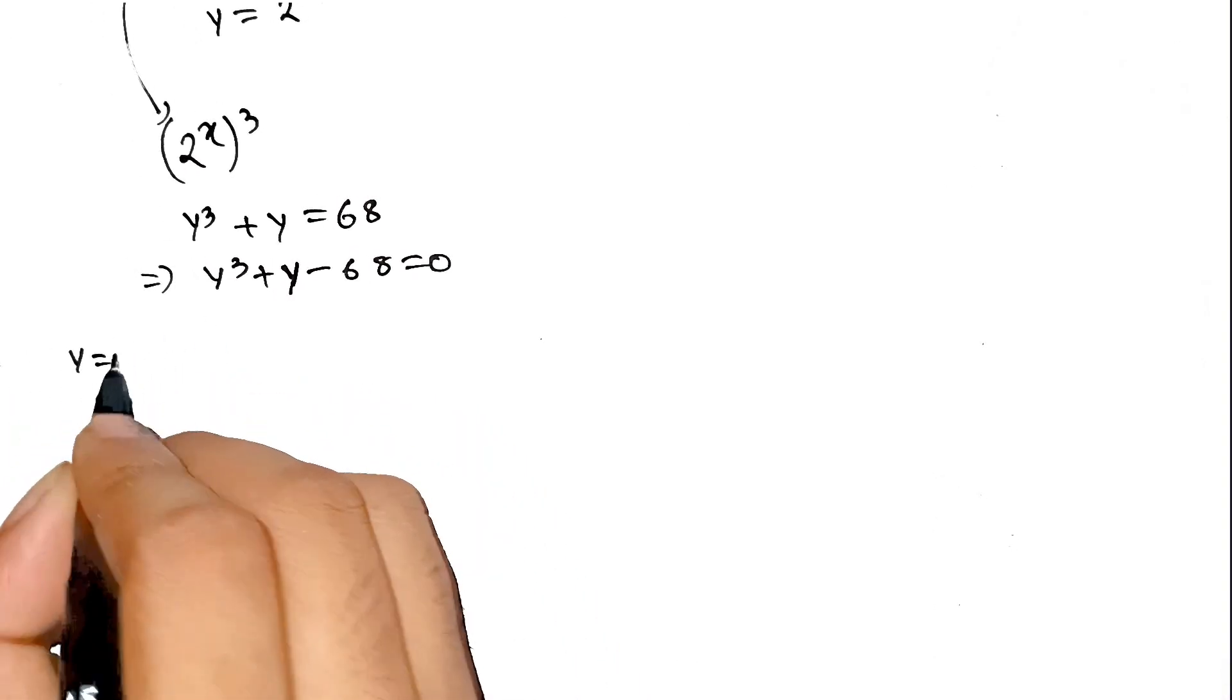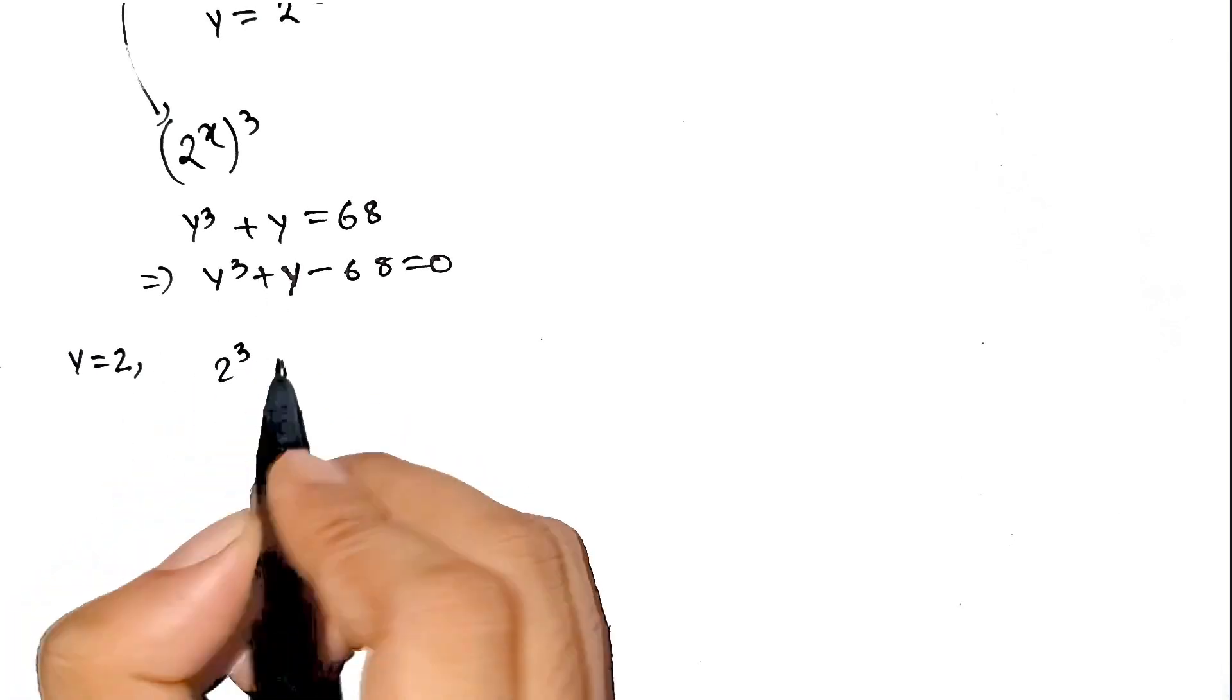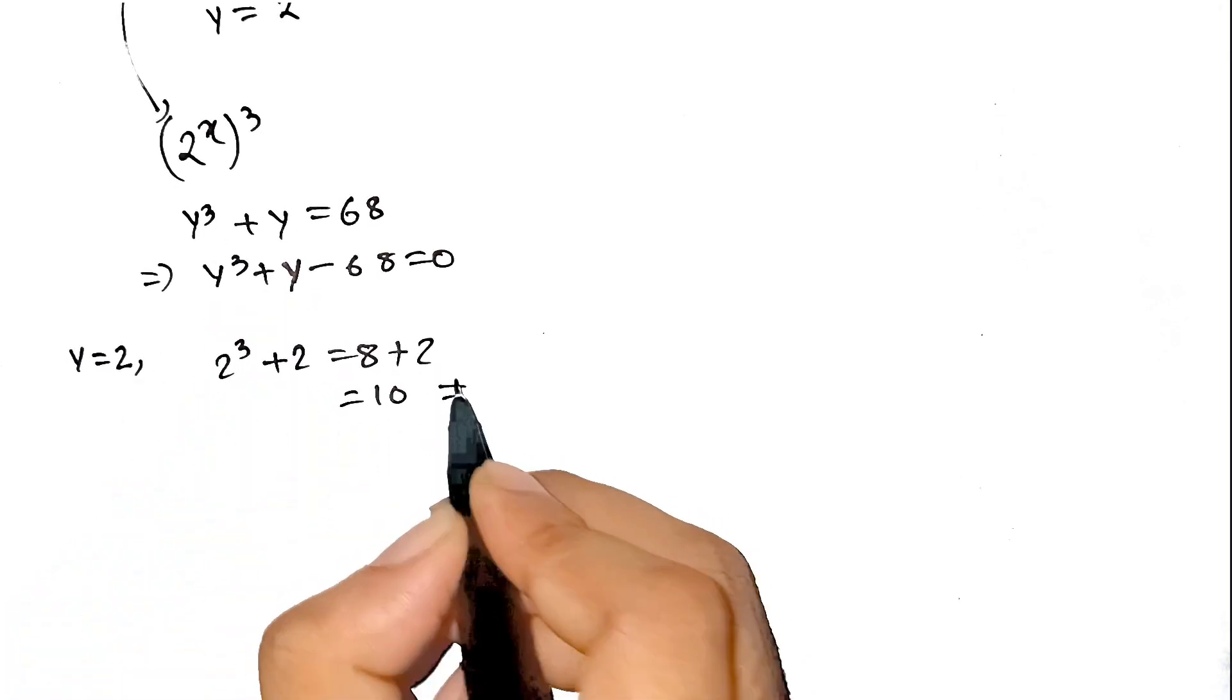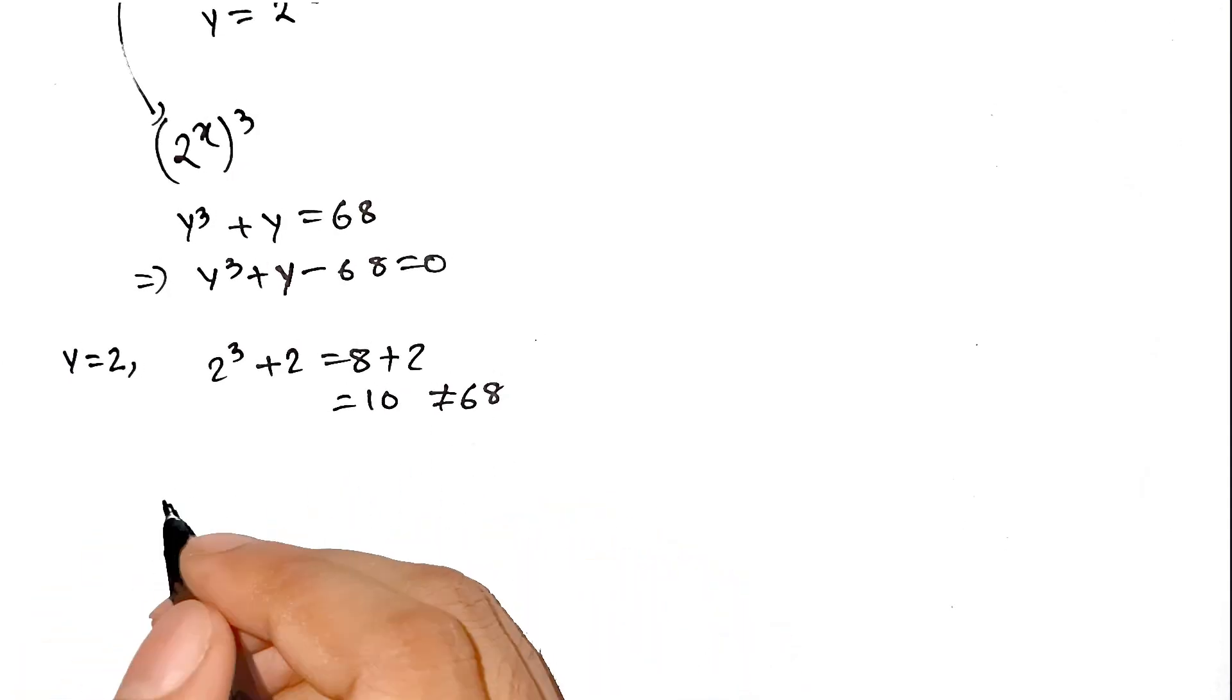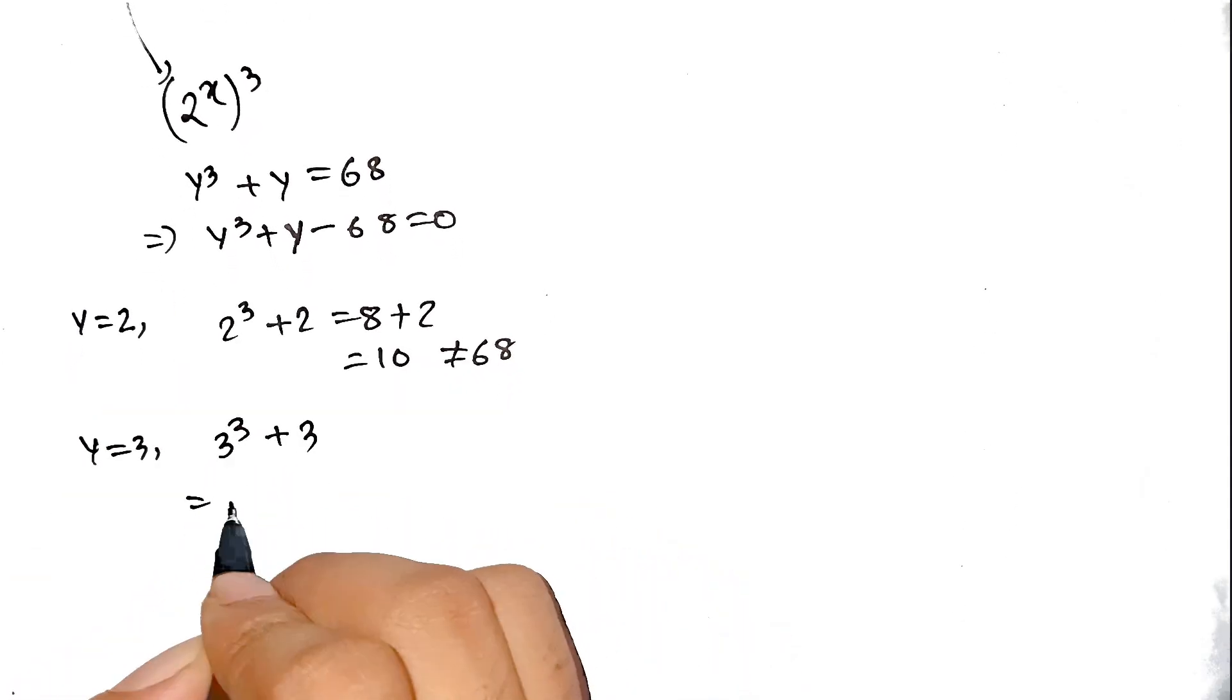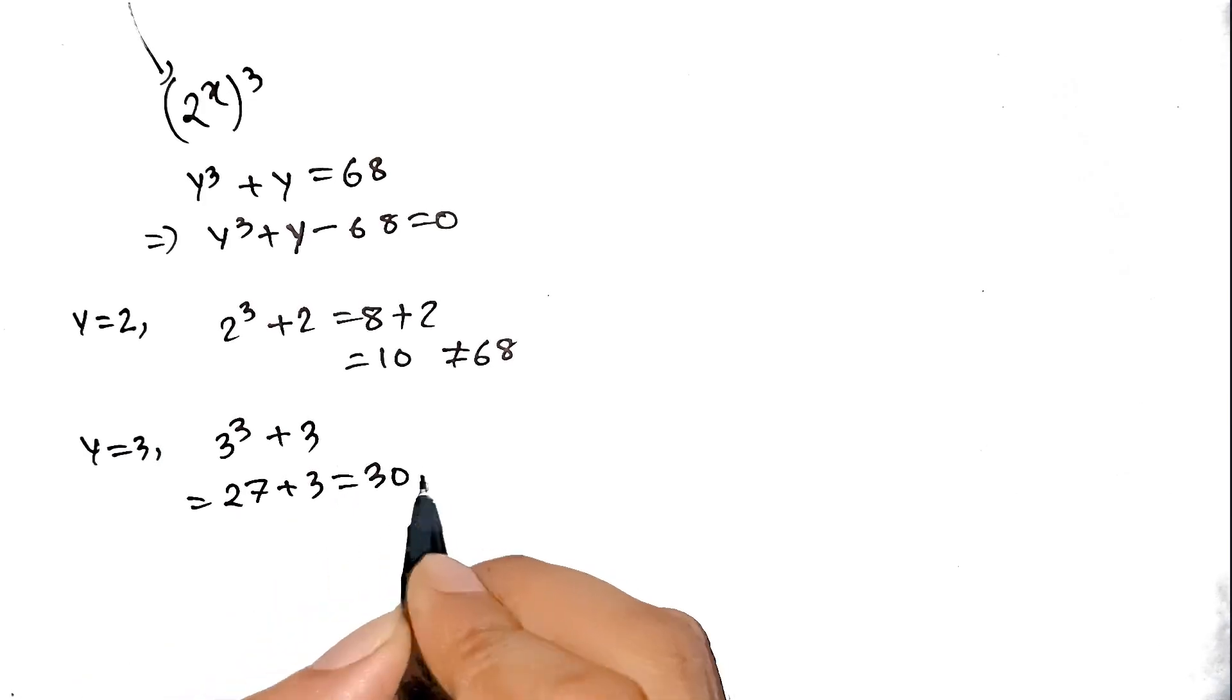Let's test y = 2. Then 2^3 + 2 = 8 + 2 = 10. Bruh. Too small. Math just said try again. Now y = 3. 3^3 + 3 = 27 + 3 = 30. Still too small.